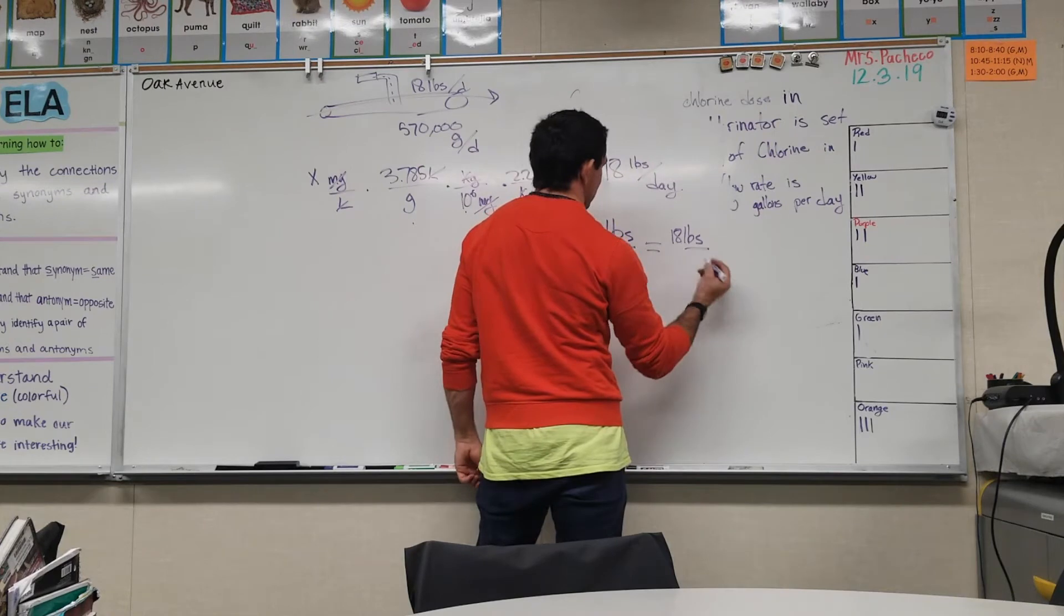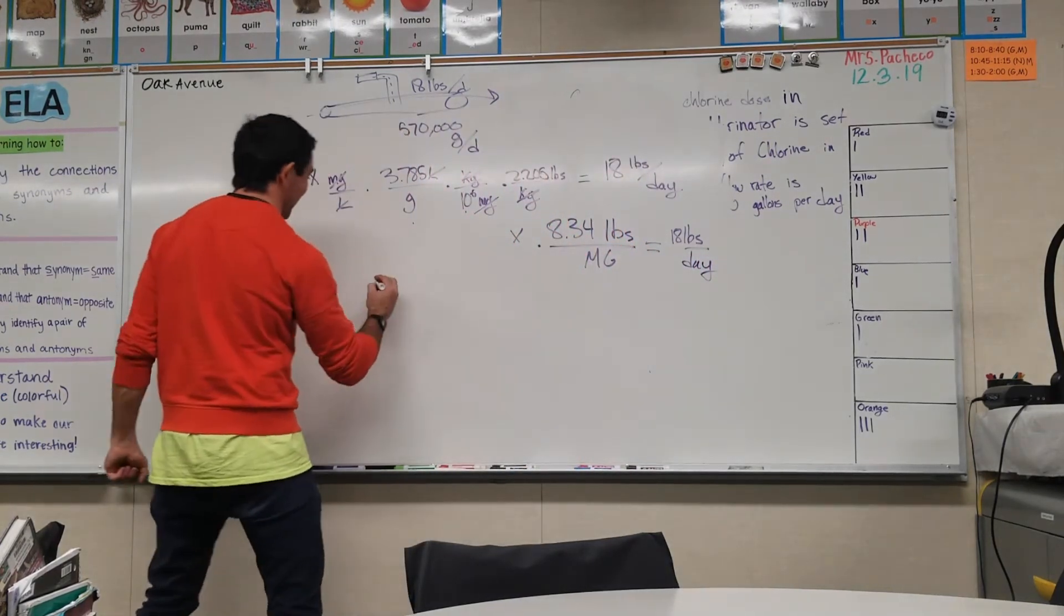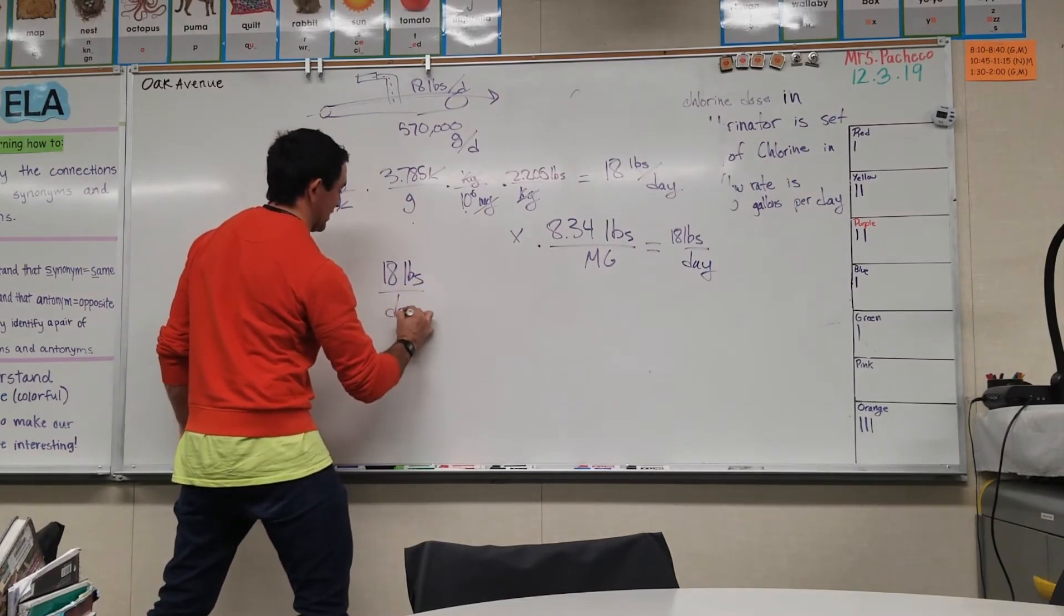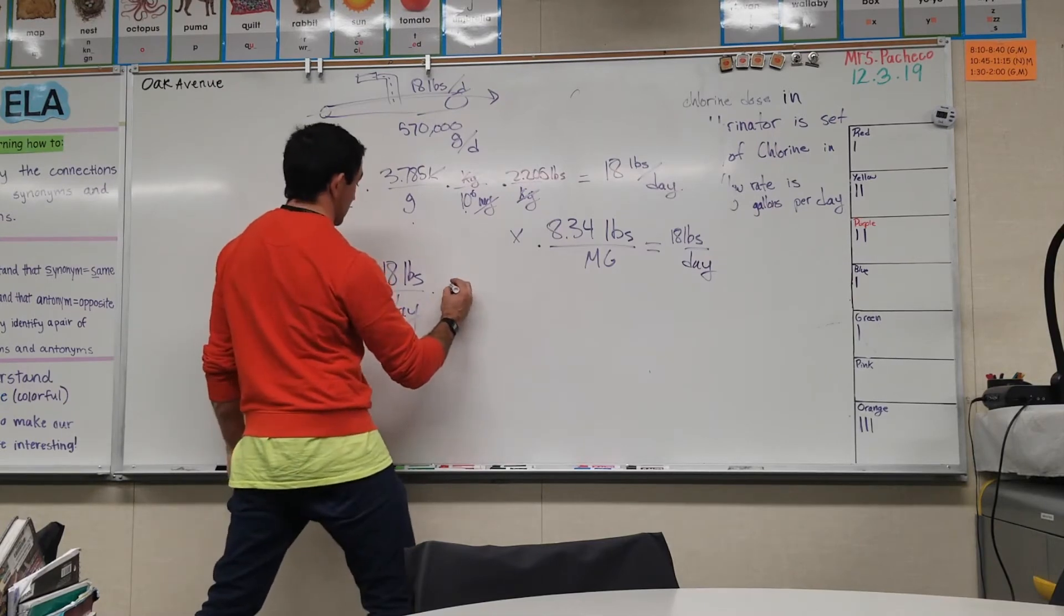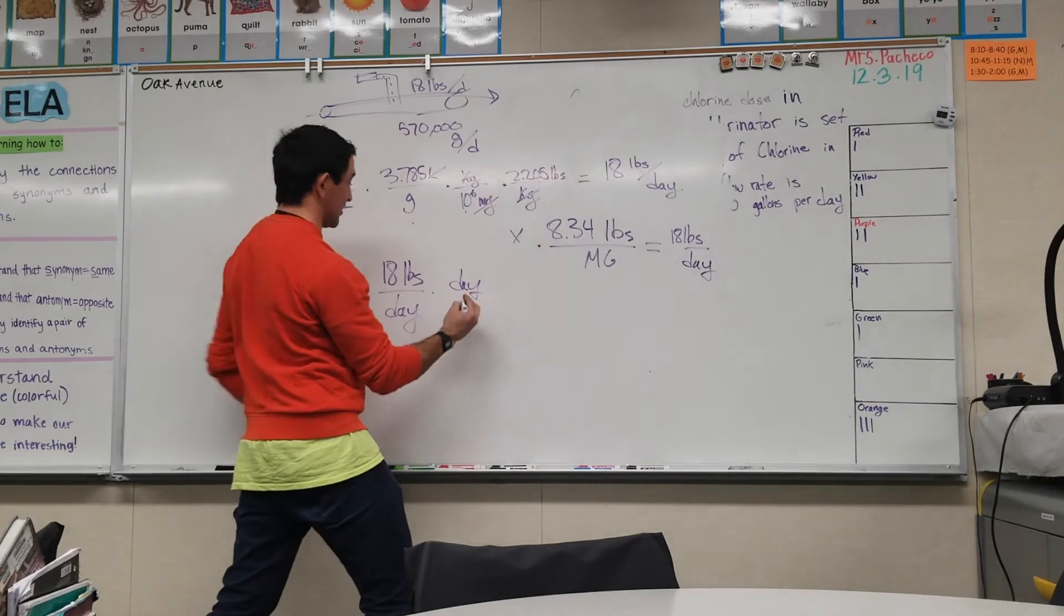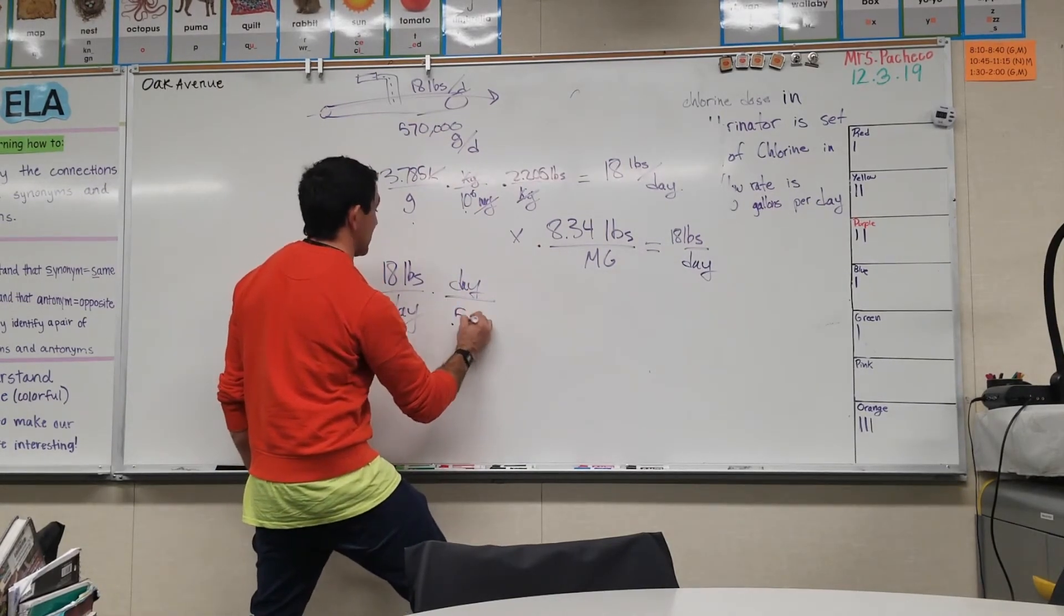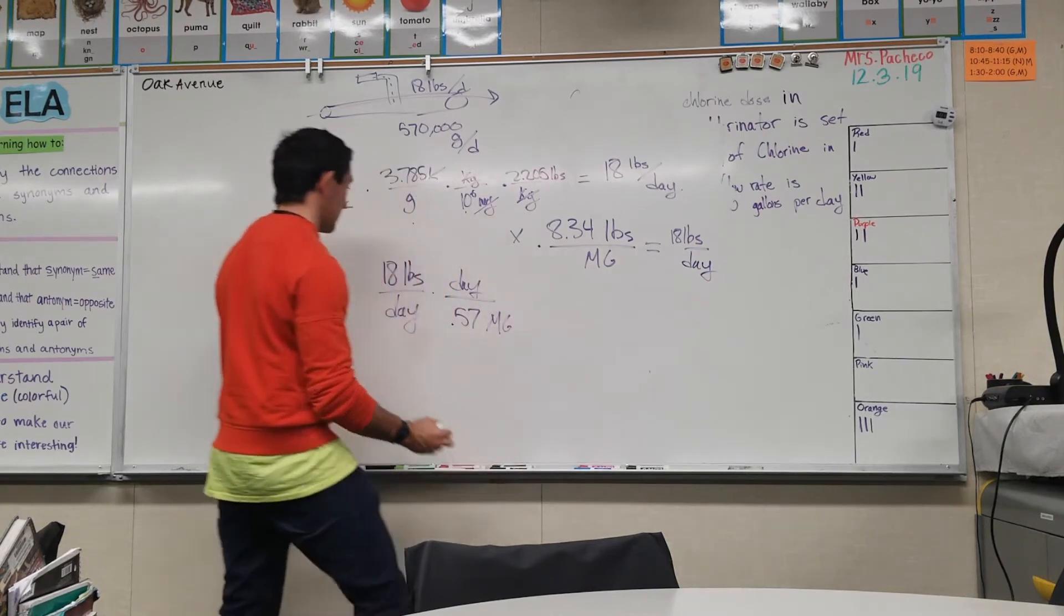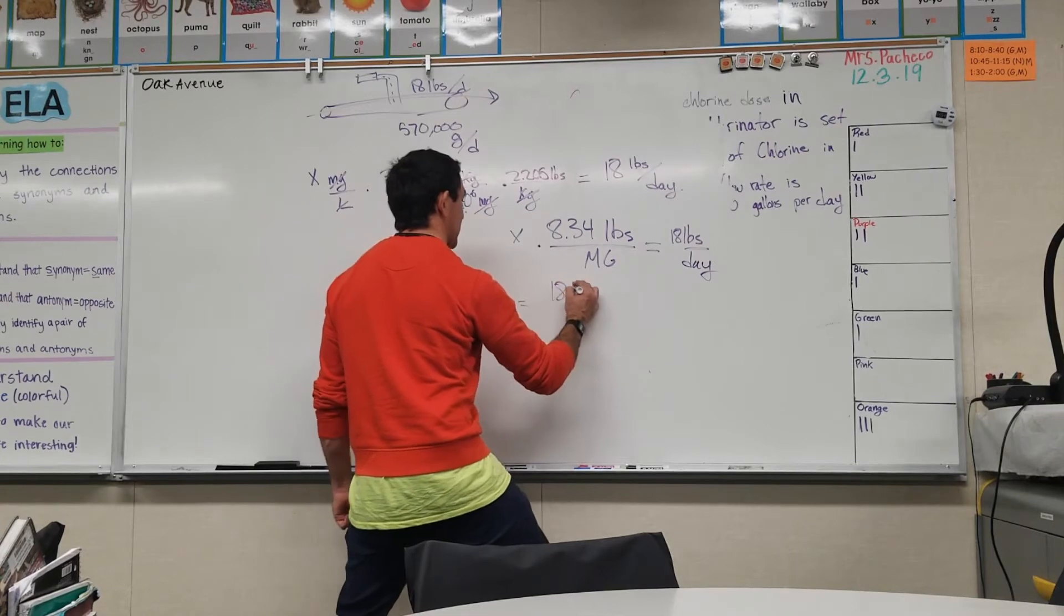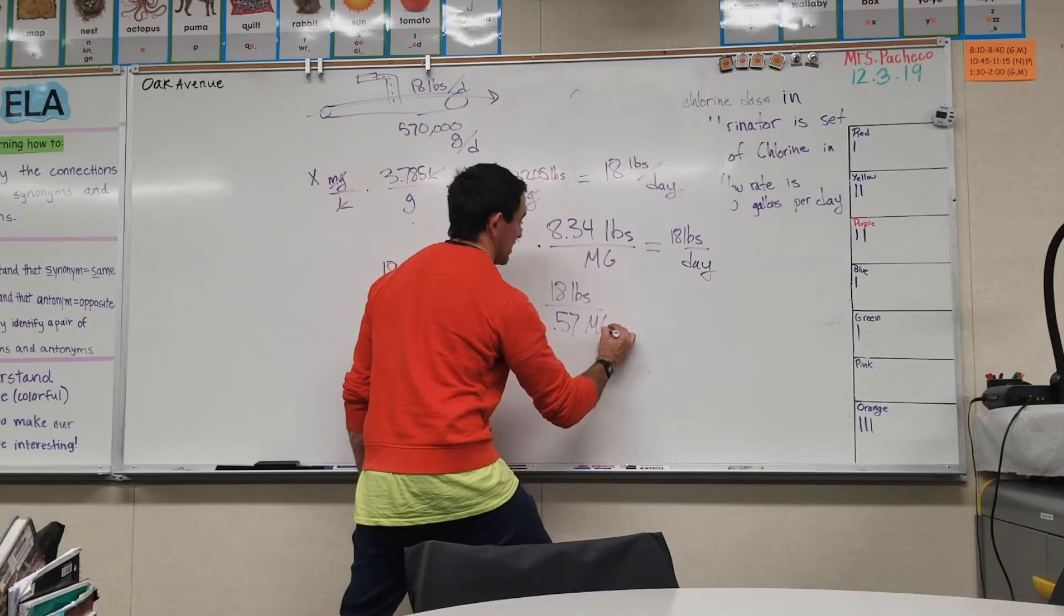Let's do it in a way that is more thorough. We got 18 pounds per day, and we also have for every day we're going to flip this fraction on its head. For every day there is 0.57 million gallons. Then the days cancel out and you get 18 pounds per 0.57 million gallons.